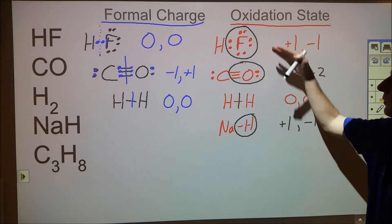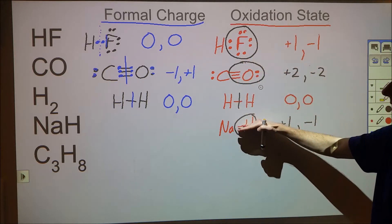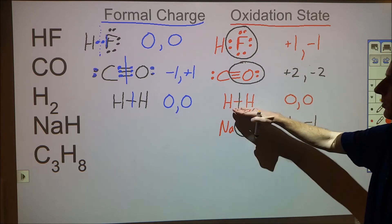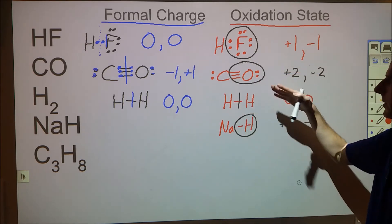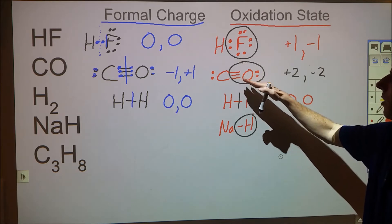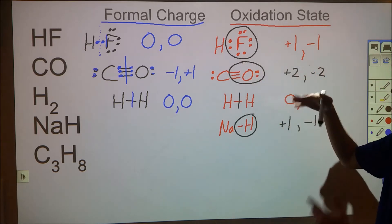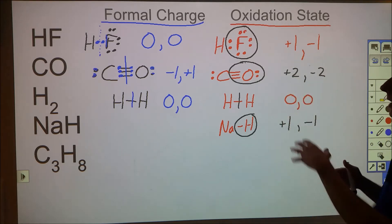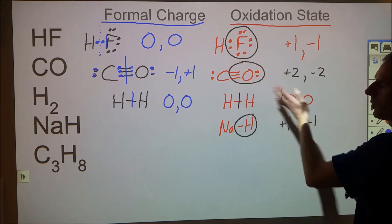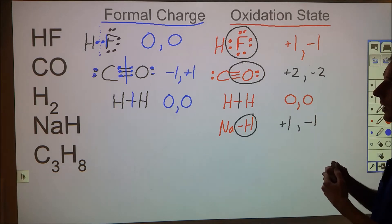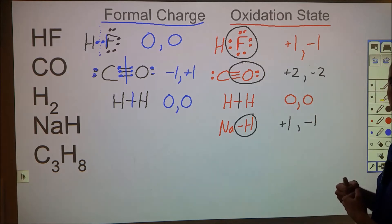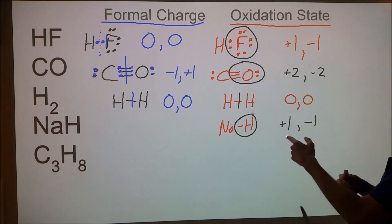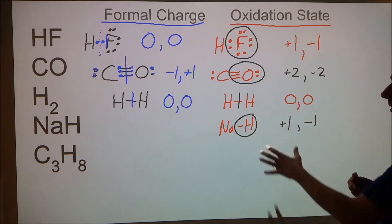You've often seen oxidation states presented as a set of rules — 'hydrogen is usually +1 with the following exceptions,' 'oxygen is −2 with the following exceptions.' But if you trace back to the origins, oxidation state is defined by splitting electrons so the more electronegative atom in each bond gets assigned all of those electrons. In the case of a tie, they split evenly.